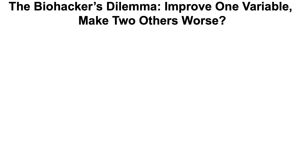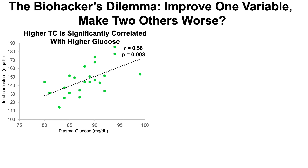But then we've got the biohacker's dilemma: if I improve one variable, do I make two others worse? In this case, one of those variables is glucose. What we're looking at here is the correlation between my total cholesterol levels and my plasma glucose levels. It isn't as strong a correlation as saturated fat — it's a moderately strong but statistically significant correlation with a coefficient of 0.58. What that means is that as my cholesterol levels increase, so do my plasma glucose levels.